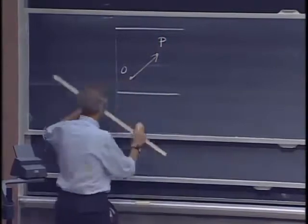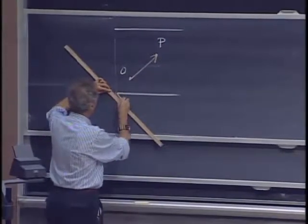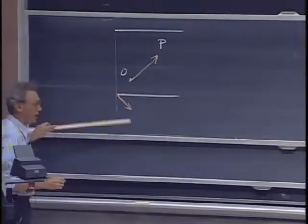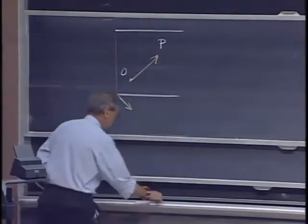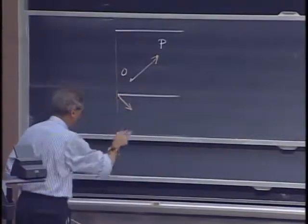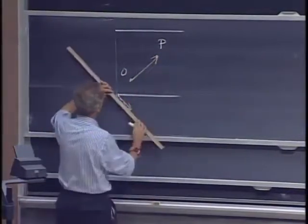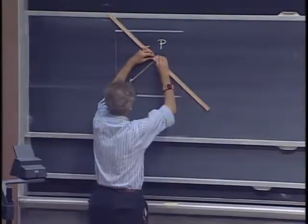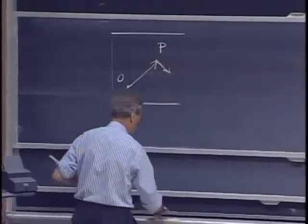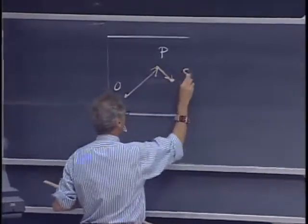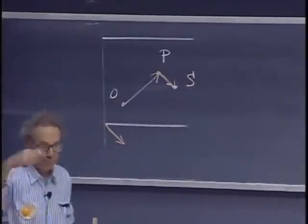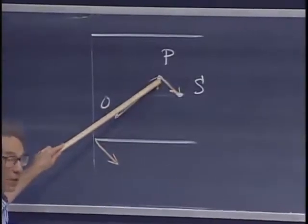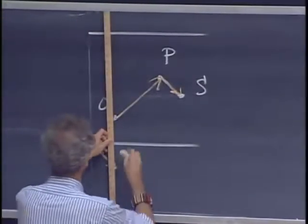It just so happens that someone is also going to move the table in that same amount of time from here to there. So that means that the table will have moved down, and so my point P will have moved down exactly the same way. And so you will see me now at point S. You will see me at point S in 26-100, although I'm still standing at the same location on the table. The table has moved.